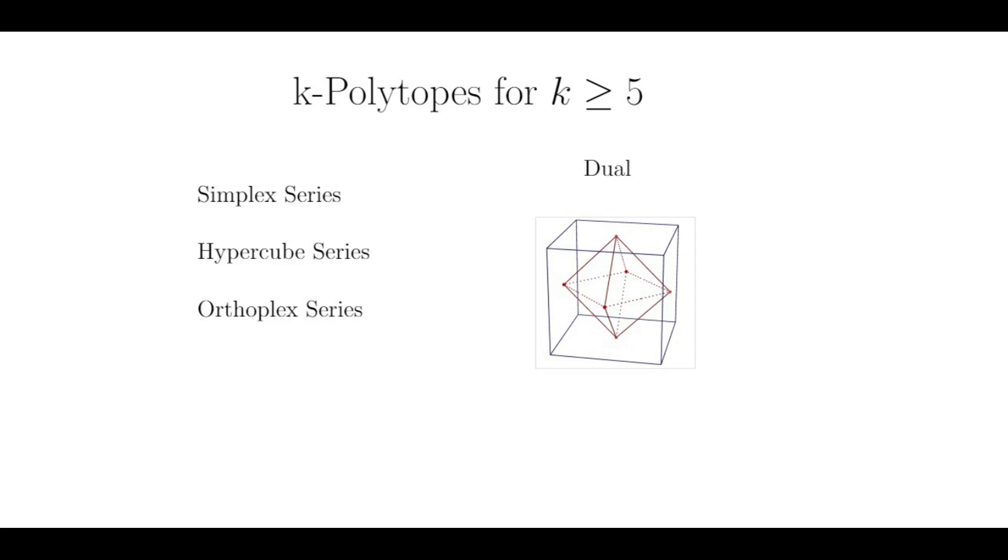There are the k-simplex series, which are higher dimensional analogues of the tetrahedron. There's the k-hypercube series, which are higher dimensional analogues of the cube, and its dual, the k-orthoplex series.